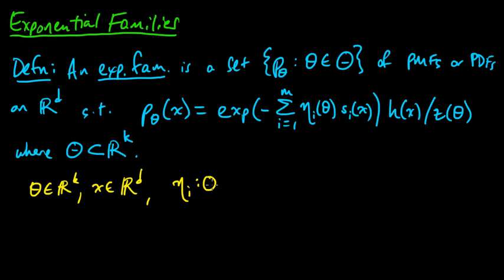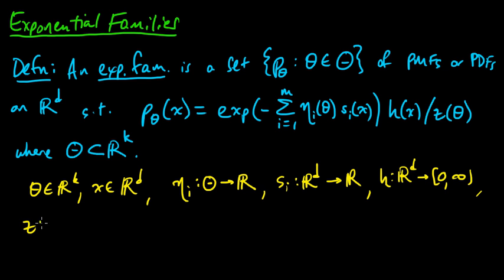Each η_i is a function from Θ to R, taking some θ and giving us a real value. Each s_i is a function from R^D to R, taking an x and giving us a real number. h is a function from R^D to non-negative reals, and z is a function from Θ to non-negative numbers.